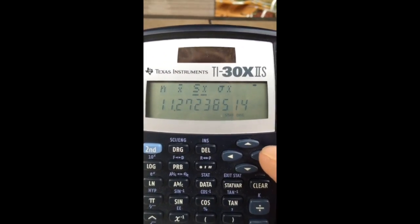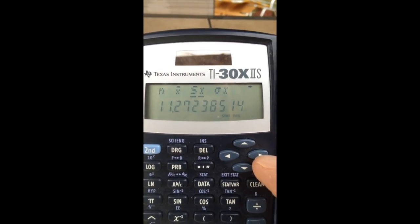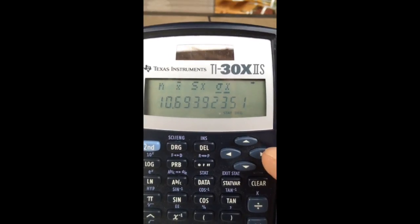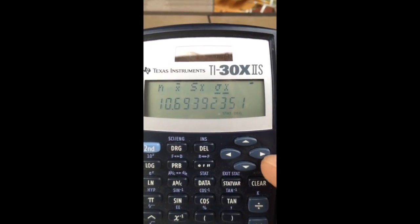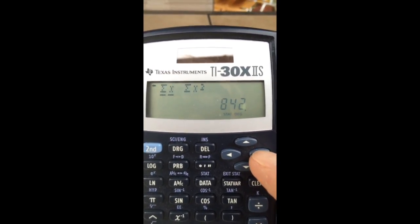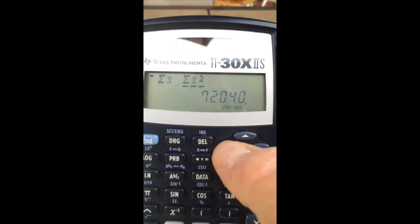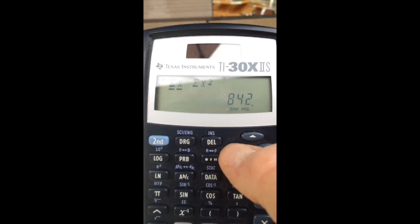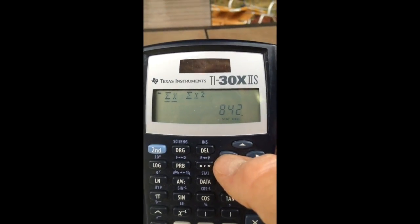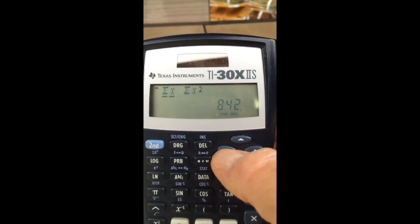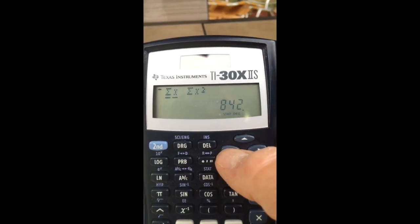My mean is 84.2. Sx, my sample standard deviation, 11.27. Sigma x, population standard deviation, 10.69. Sigma x, and sigma x squared, I'm not going to be too worried about. We're not going to be needing those values too much in our course. That's it. I've entered my data.